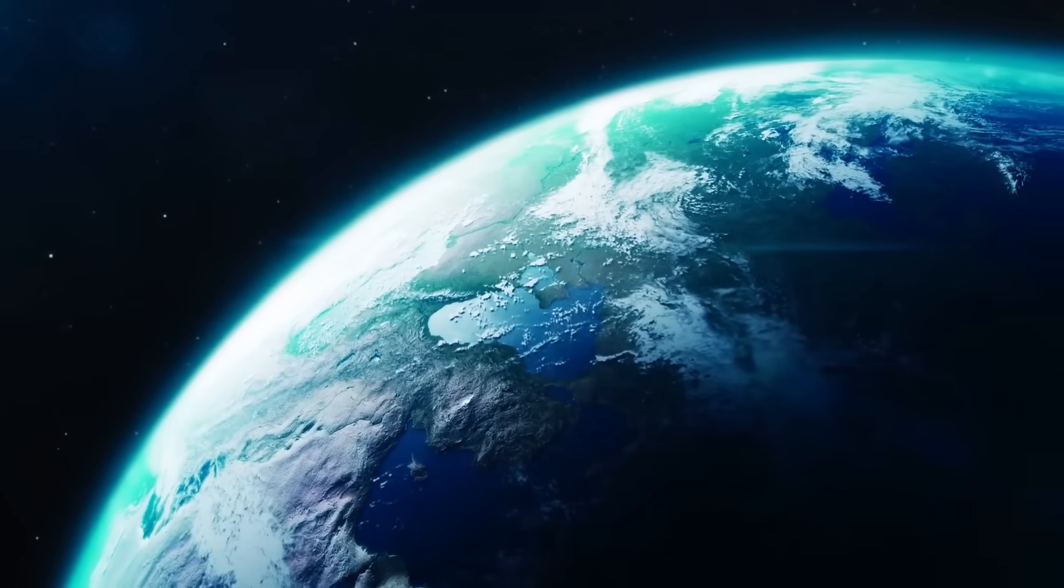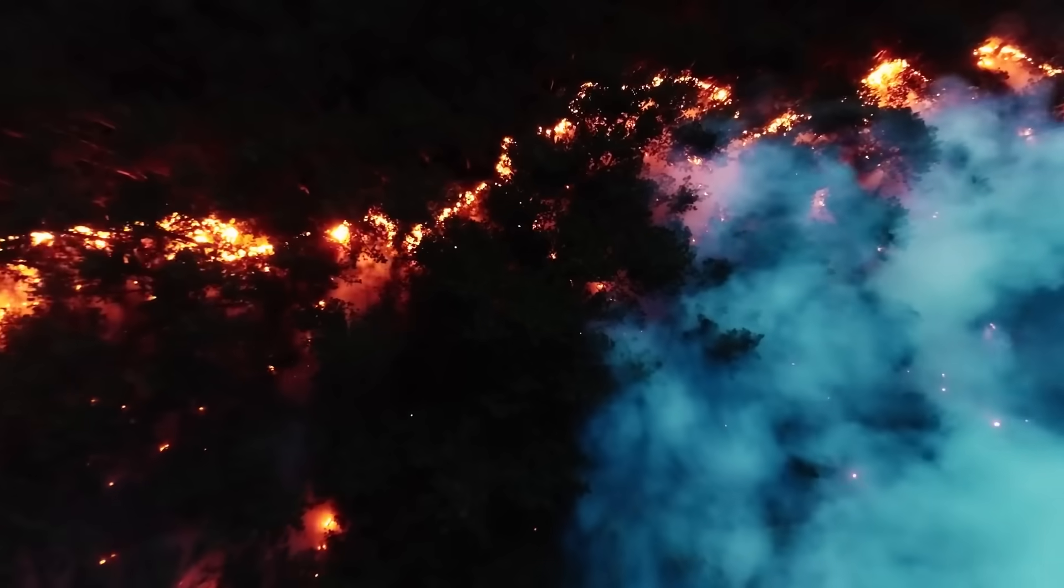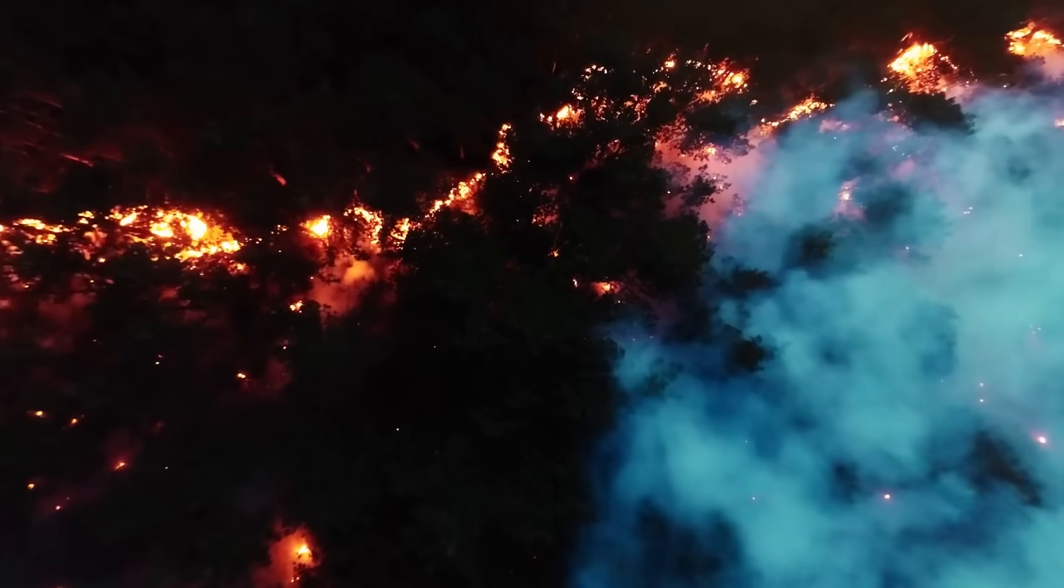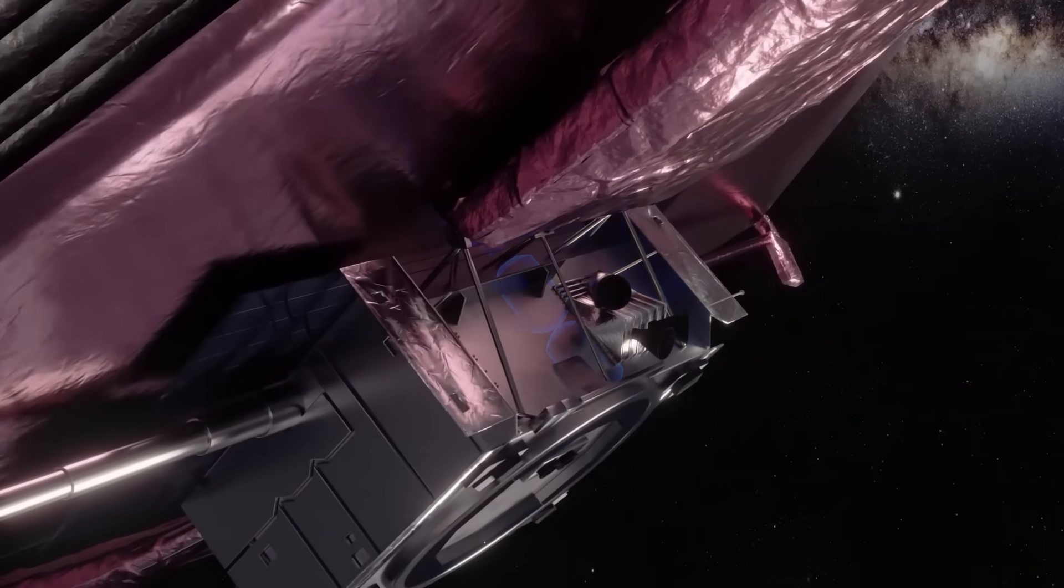More frightening than what it resembled was where it was located. The coordinates matched a cold spot in the cosmic microwave background, an area long thought to be a statistical anomaly, devoid of galaxies and stars. But now, it looked more like a lock, a vault, a geometric construct encoded into the fabric of the universe itself. And if it's a vault, what's inside it?